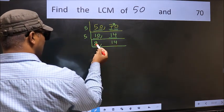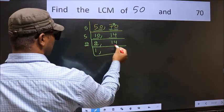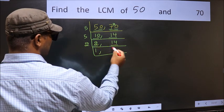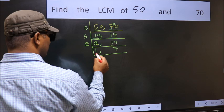Now we have 2. Since 2 is a prime number, 2 times 1 is 2. The other number is 14. When do we get 14 in the 2 table? 2 times 7 is 14. Now we got 1 here.